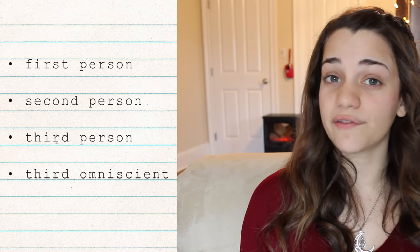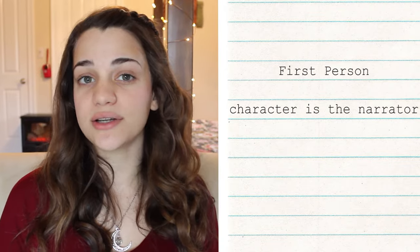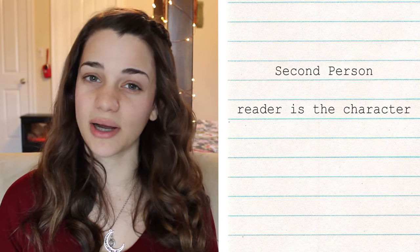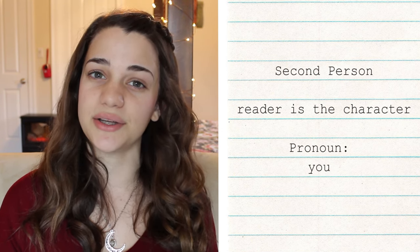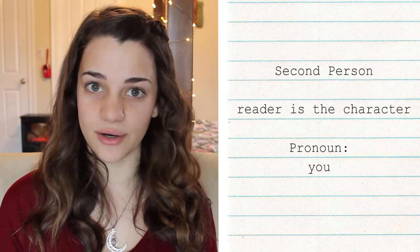Narrative perspective is the point of view of the narrator. The four main ones are first person, second person, third person, and third omniscient. First person is when the character is the narrator, so it uses the pronouns I and me. Second person is an odd one that isn't used that often in creative writing, but if you've ever read a choose-your-own-adventure book, that one's probably in second person. It uses the pronoun you, because the reader is meant to be the character.